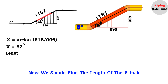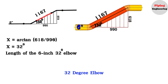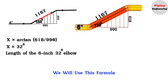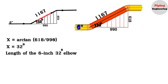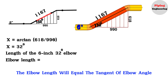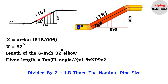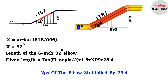Now we need to find the length of the 6-inch, 32-degree elbow. We will use this formula: elbow length equals the tangent of the elbow angle divided by 2, times 1.5 times the nominal pipe size (NPS) of the elbow, multiplied by 25.4.